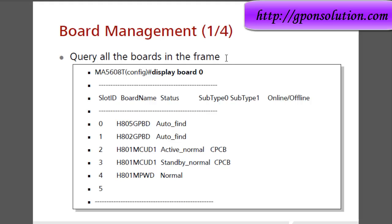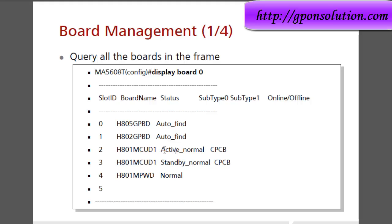Board management: to query all boards in the frame, use the command 'display board 0'. By this command we can show all board information. This is a service board in auto-find status. After you confirm or add this board it will go to normal state. This is the control board — this one is active and this one is standby. This is the power board.